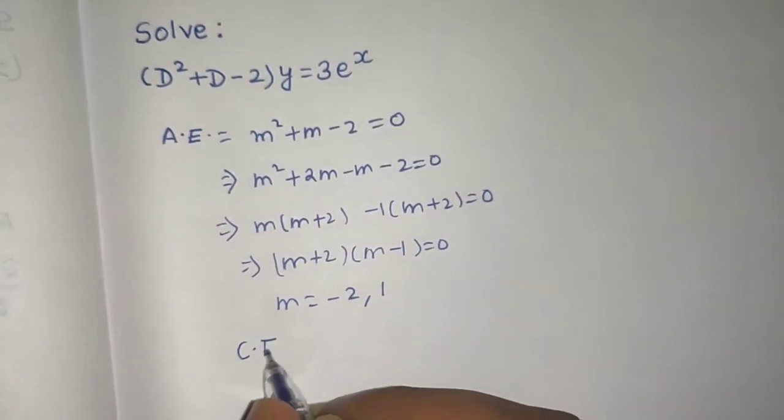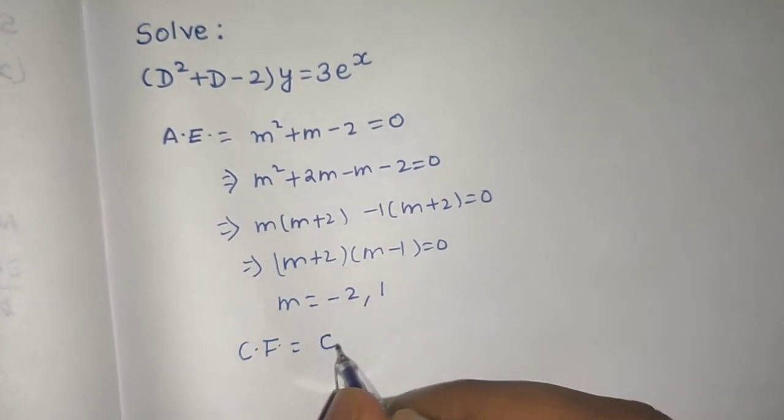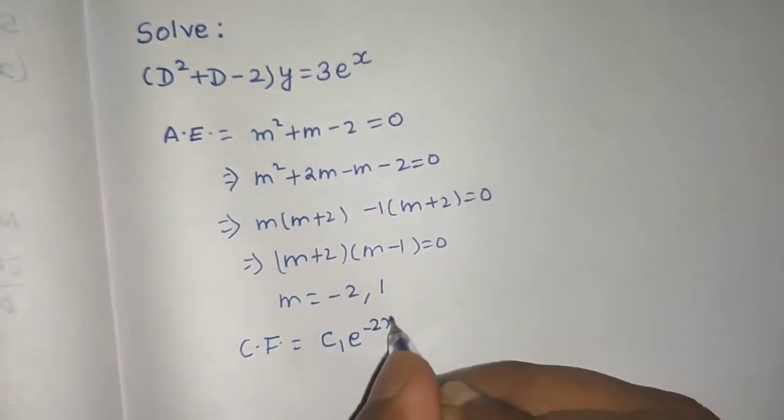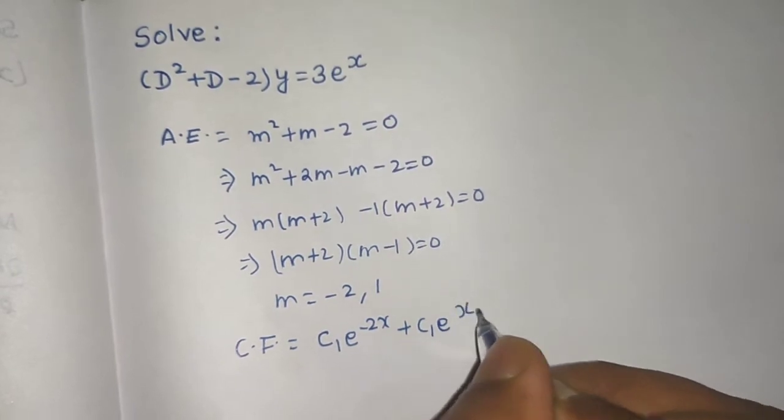Real and distinct, so complementary function is c1 e power minus 2 x plus c2 e power x.